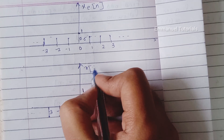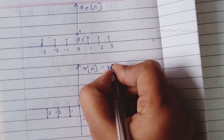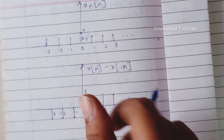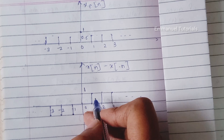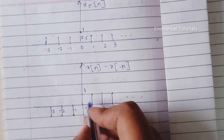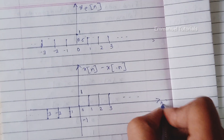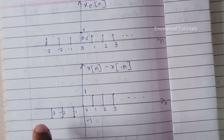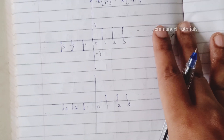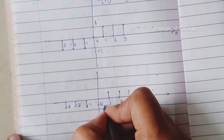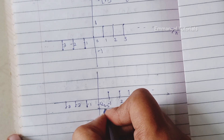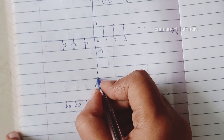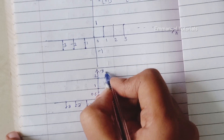This is our x(n) minus x(-n). To get the odd part, we divide the amplitudes by 2. At n equal to 0, 0 divided by 2 is 0. From 1 to infinity it is 1/2 which is 0.5. From minus infinity to minus 1 it is minus 1/2 which is minus 0.5. That is what is drawn here — minus 0.5 on the negative side and 0.5 on the positive side. This is our odd part.